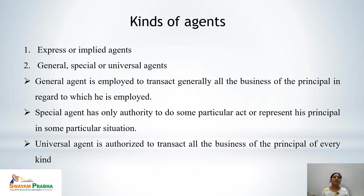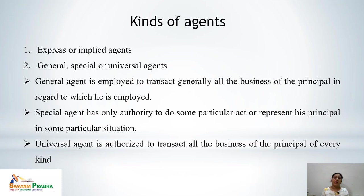Now we come to the kinds of agents. The first category is express or implied agents. When a principal appoints someone expressly in words, that is an express agent. When someone works on behalf of another based on conduct or circumstances, that is an implied agent.